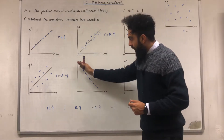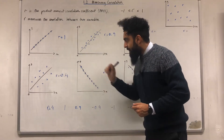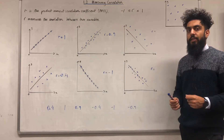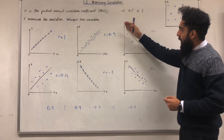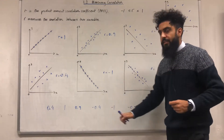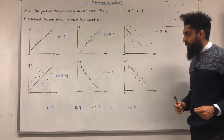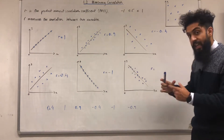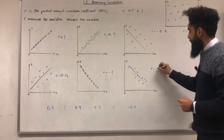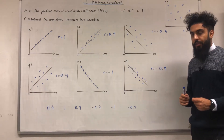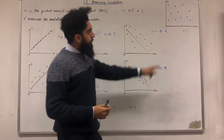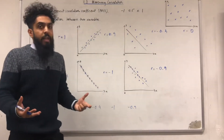This coordinate grid has a straight line with negative gradient and points on the line — R = -1, a perfect negative correlation. For the next grid I assign R = -0.4, a weak negative correlation. Another grid has a negative gradient with points really close to the line — R = -0.9, a strong negative correlation. Finally, one grid shows no correlation between Y and X, so R = 0.